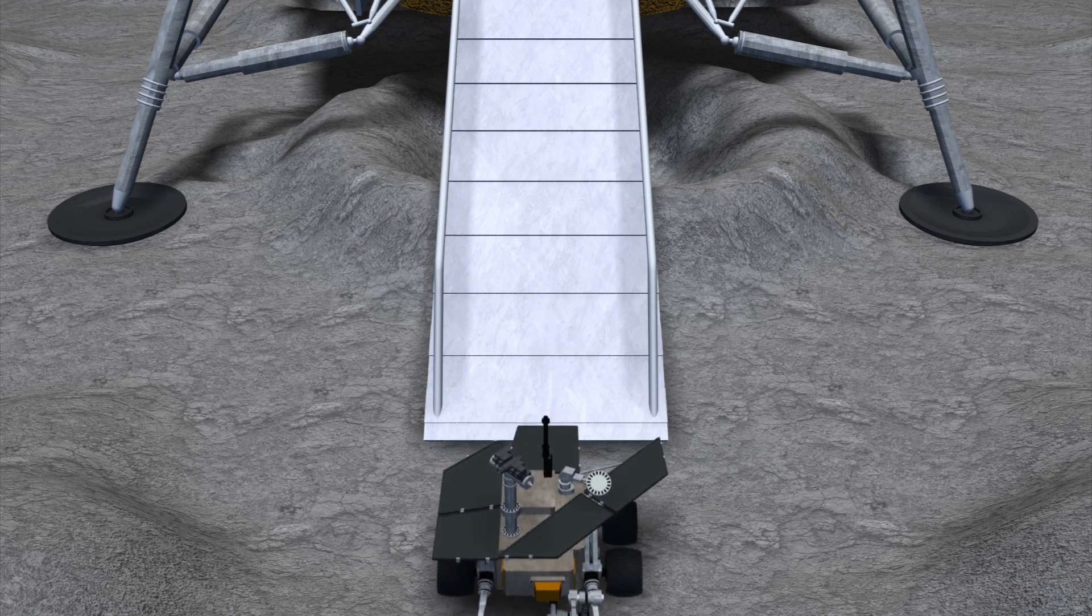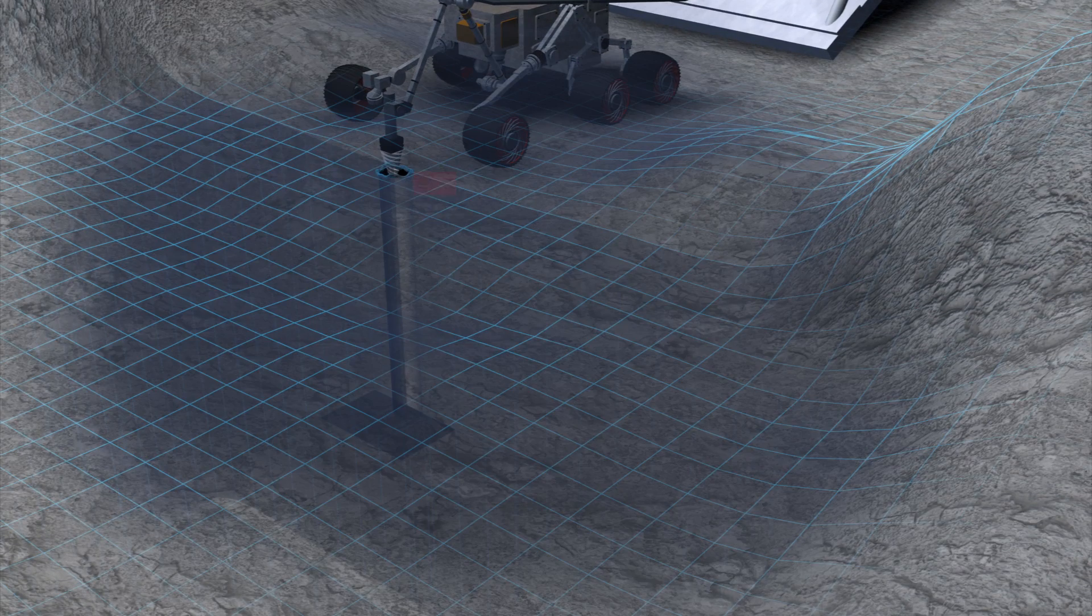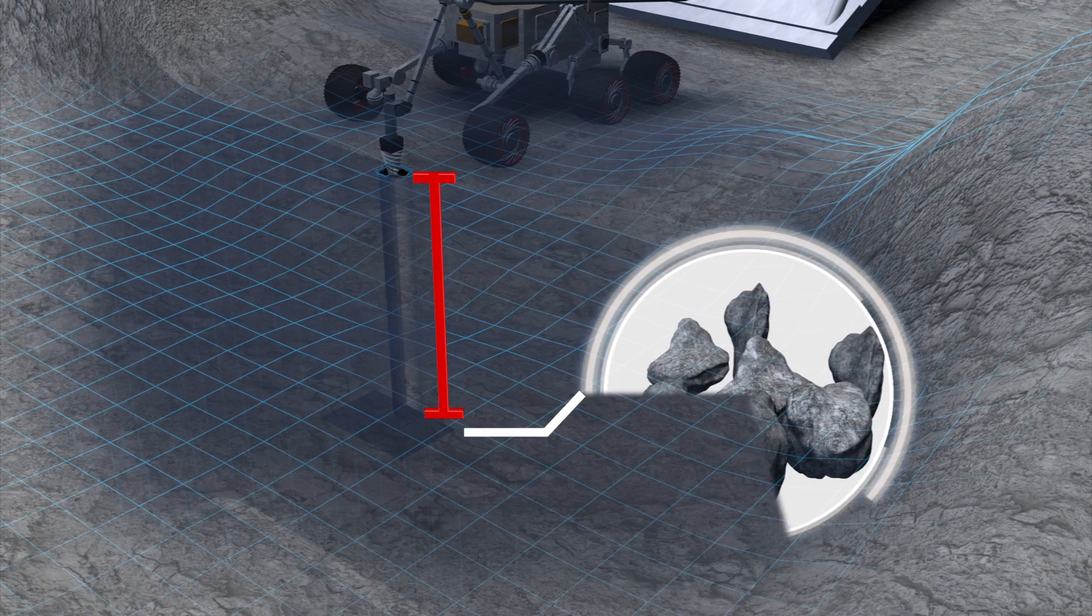After making a soft landing, the lunar rover will dig and collect rock samples from up to two meters below the surface.